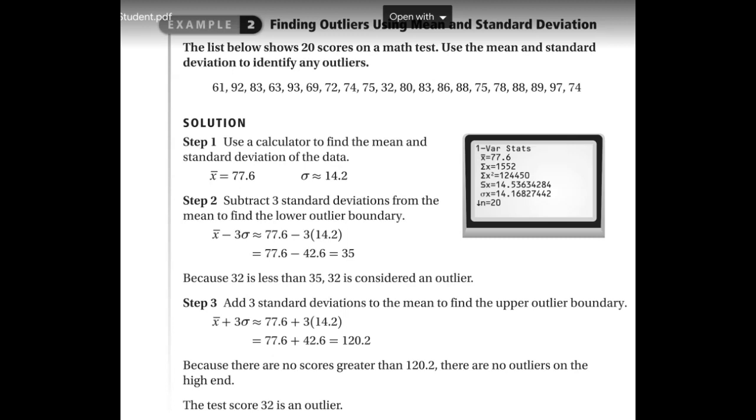The second way to find if your data set contains any outliers is to use the mean and standard deviation. Here's 20 test scores from a math test. We could input these and use the calculator to find the mean and standard deviation. They've given it to us right here. Our mean is 77.6, and our standard deviation is 14.2.